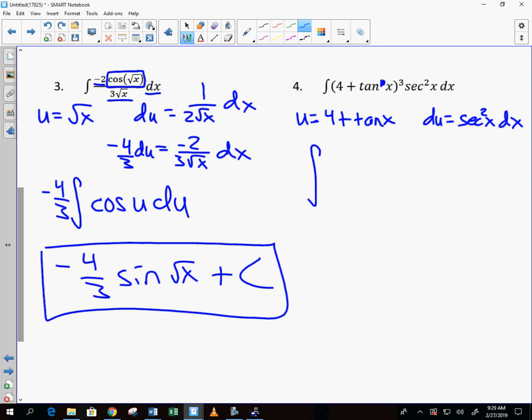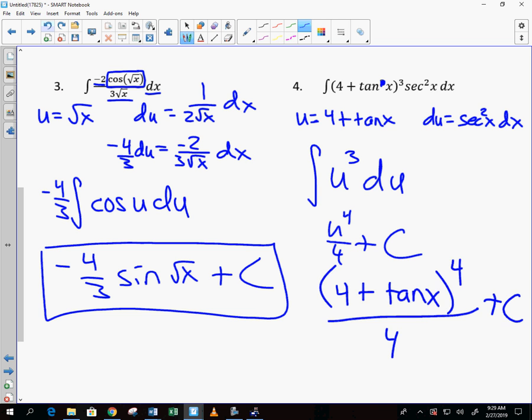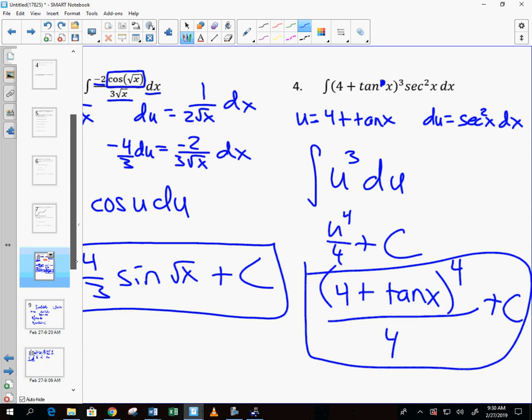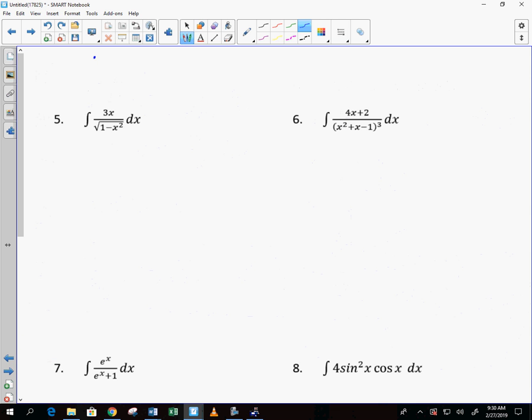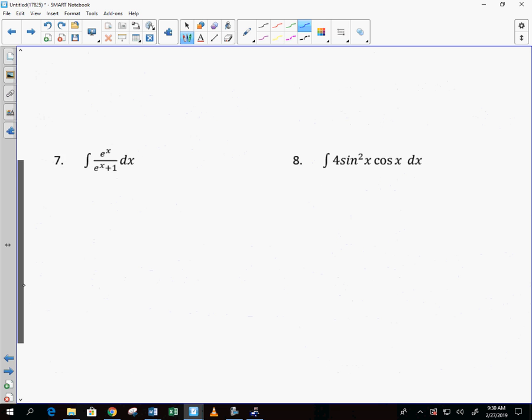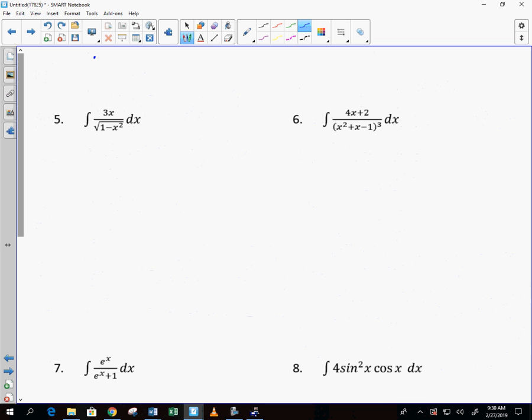So u is going to be 4 plus tangent of x. And du is equal to secant squared of x dx. I have the integral. What do I get rid of 4 plus tangent of x with? u cubed. What do I get rid of secant squared dx with? Hey, that was sweet, huh? What's the derivative of u cubed? 4th over 4 plus c. So I replace u with 4 plus tangent. The 4th power over 4 plus constant. That's cool. I like that guy right there.